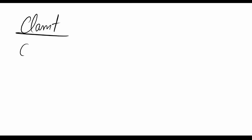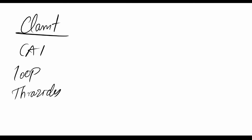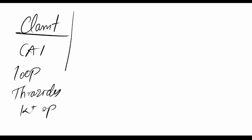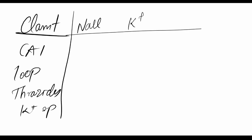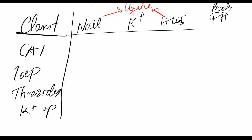Now, depending on the classification — we have carbonic anhydrase inhibitors, loop diuretics, thiazide diuretics, and potassium-sparing diuretics — let's look at the excretion of respective ions. We'll consider sodium chloride, potassium ions, bicarbonate ions, and the pH of the body. These are urine contents, and we will discuss their excretion and the effect on body pH.